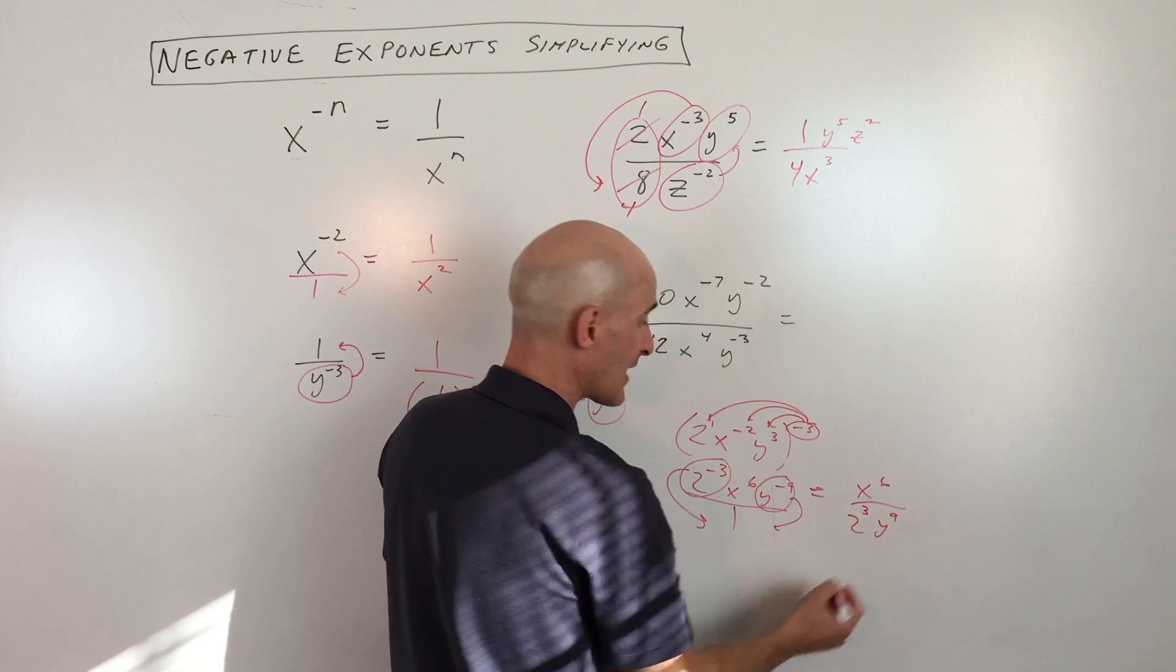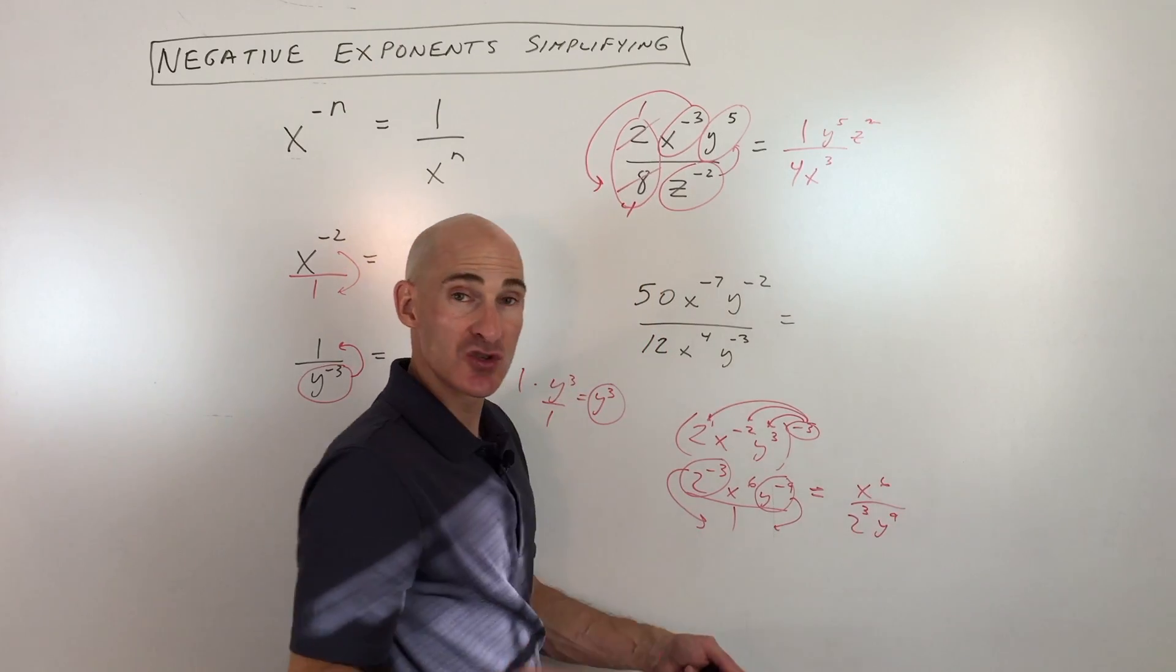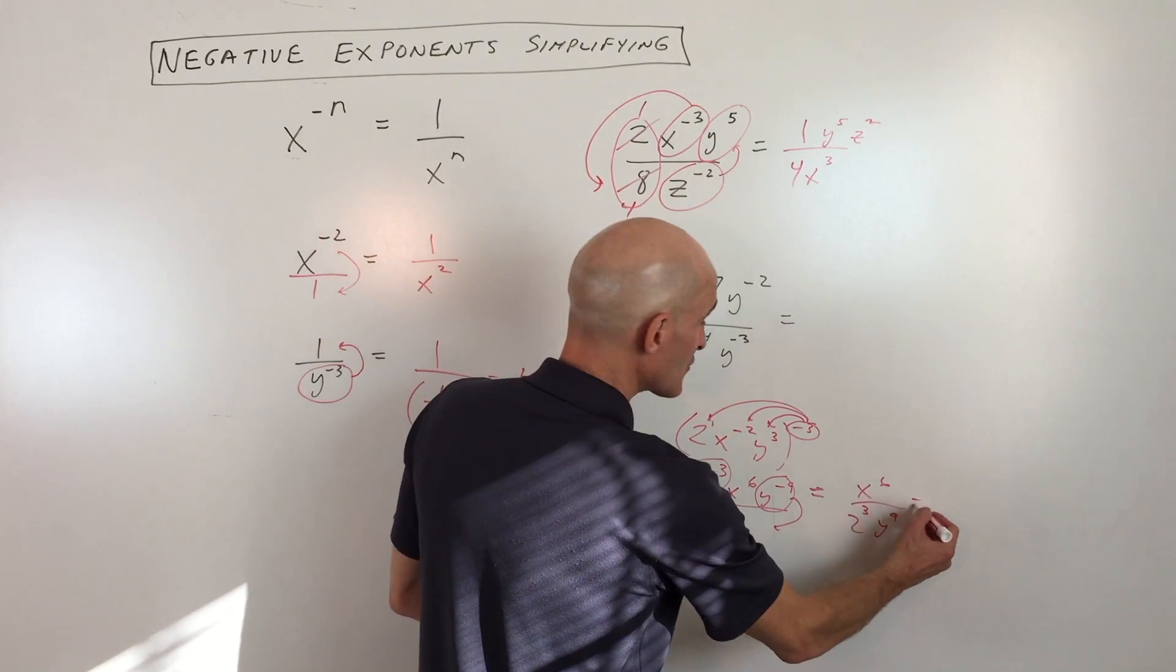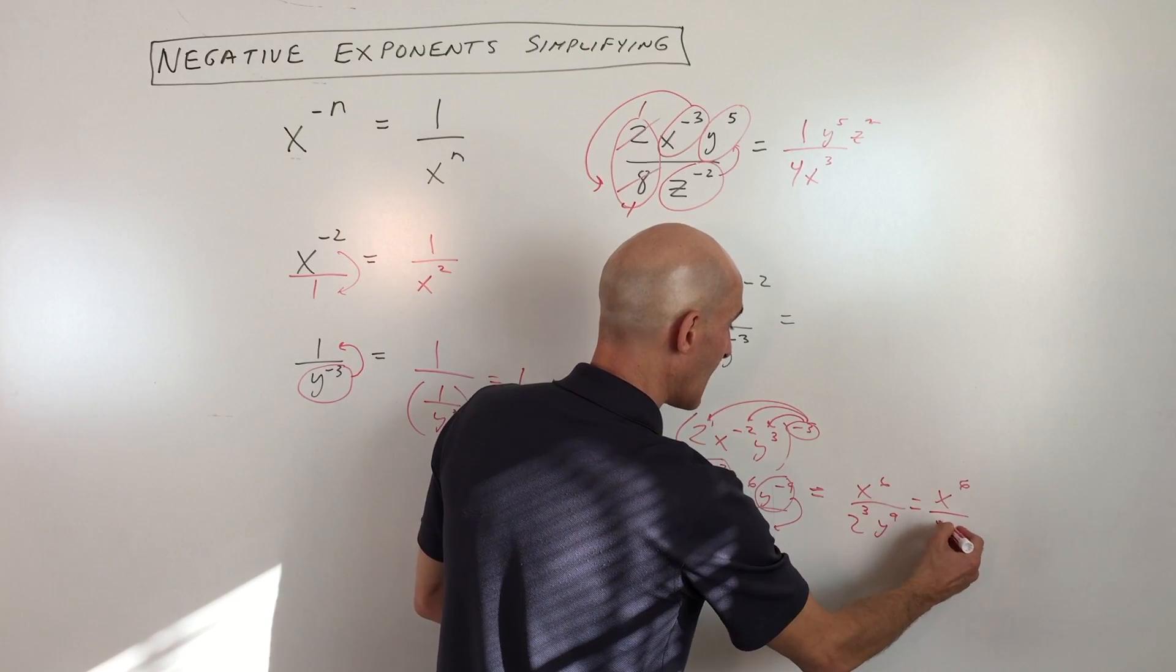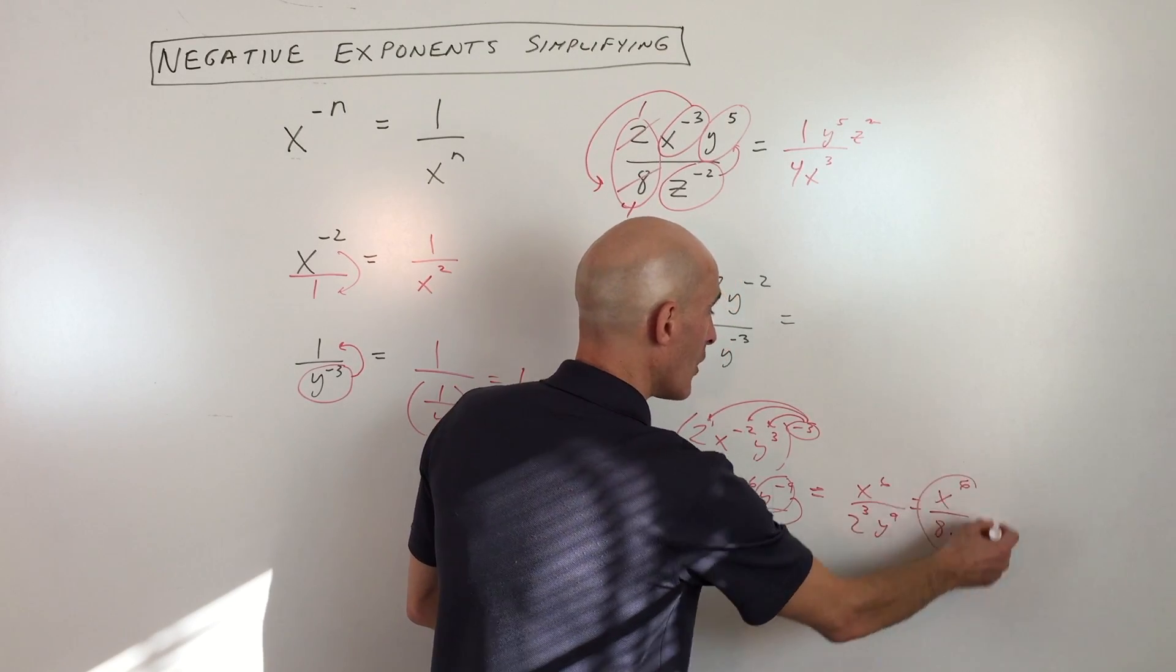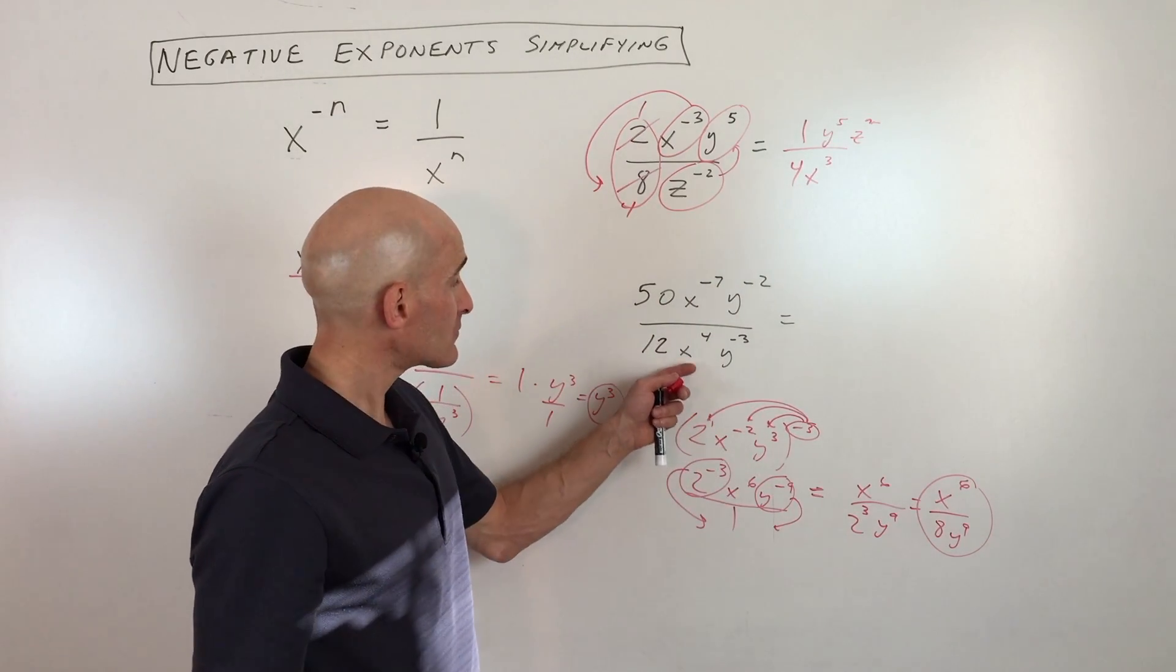2 cubed is 2 times 2 times 2, three times, so that comes out to x to the sixth over 8 y to the ninth. Okay, let's look at one more example, this one here.